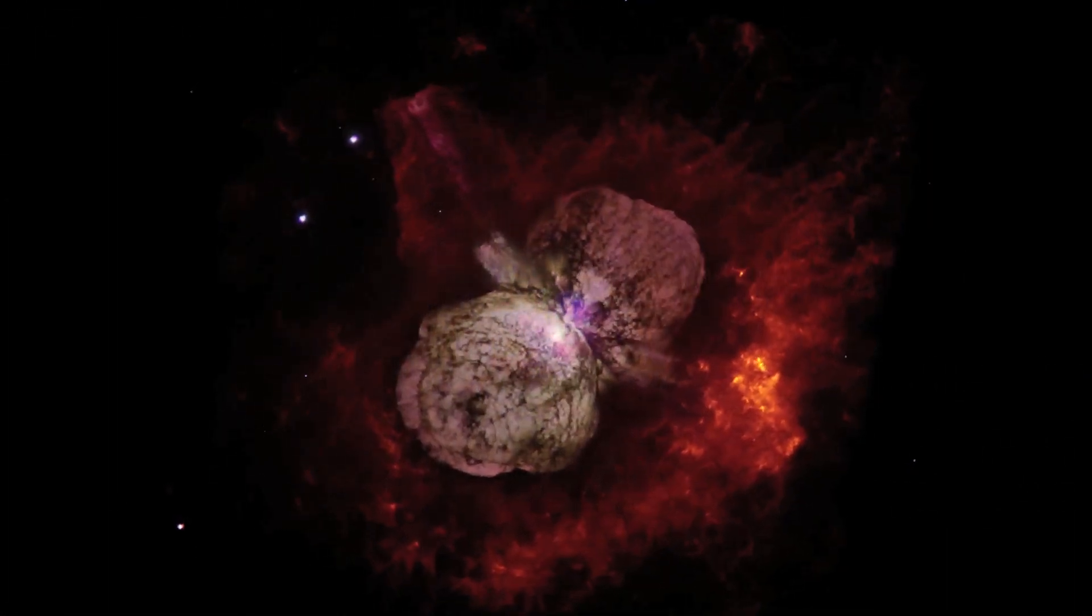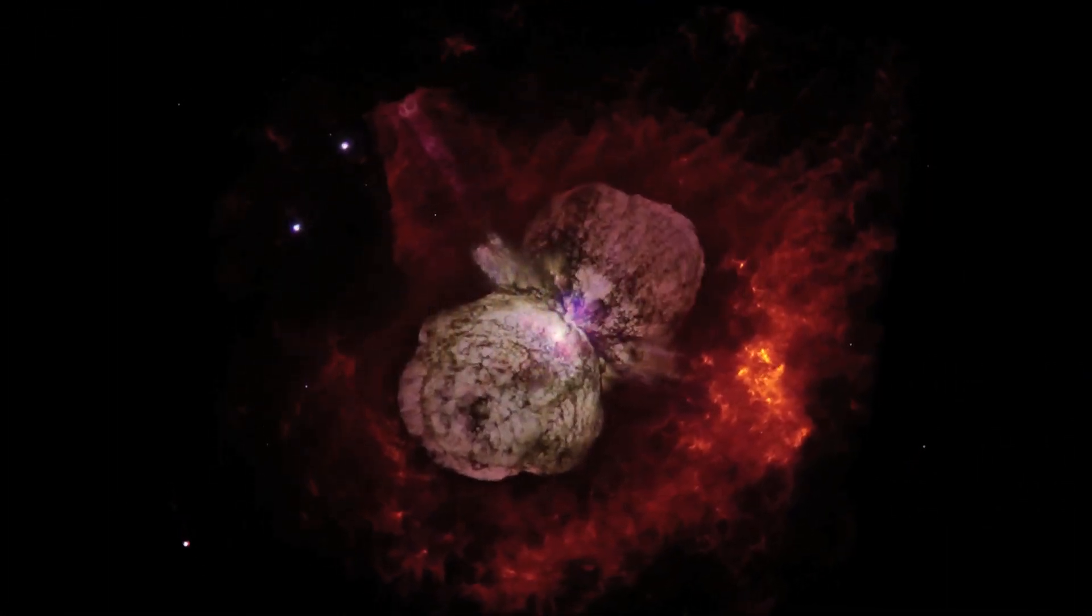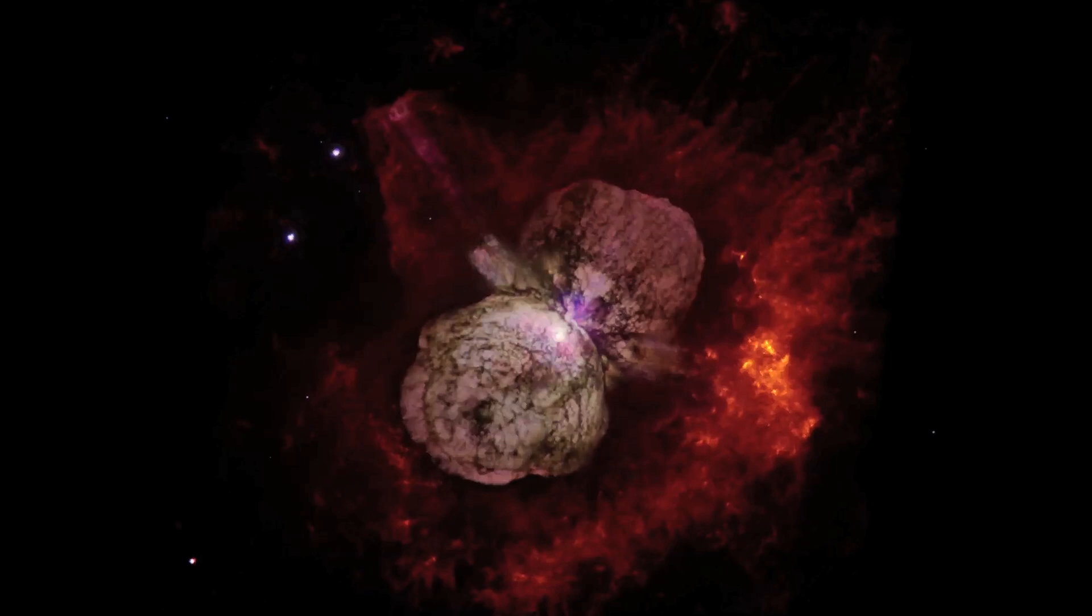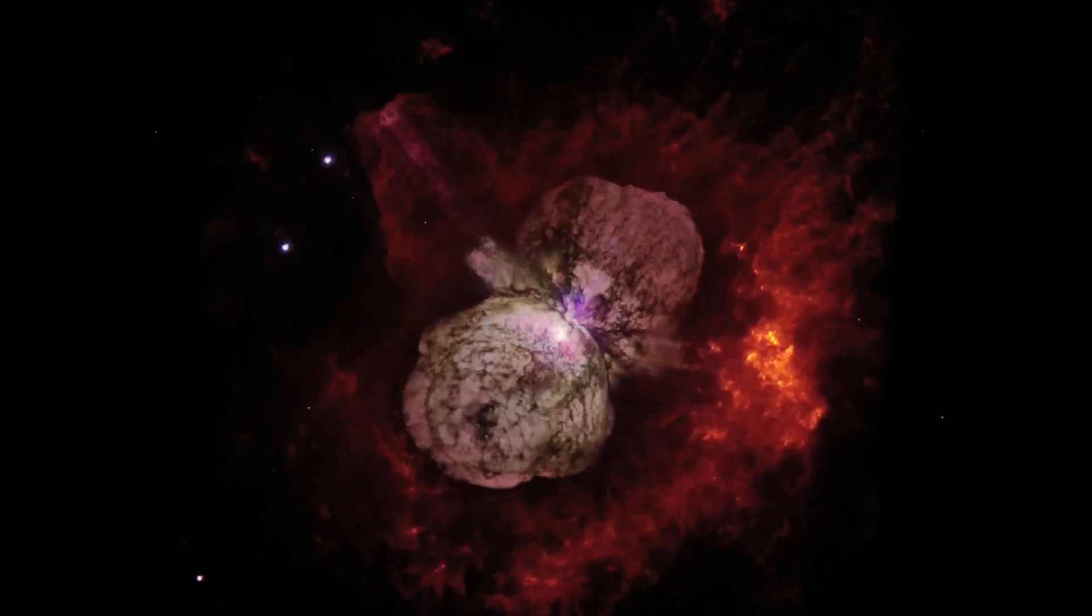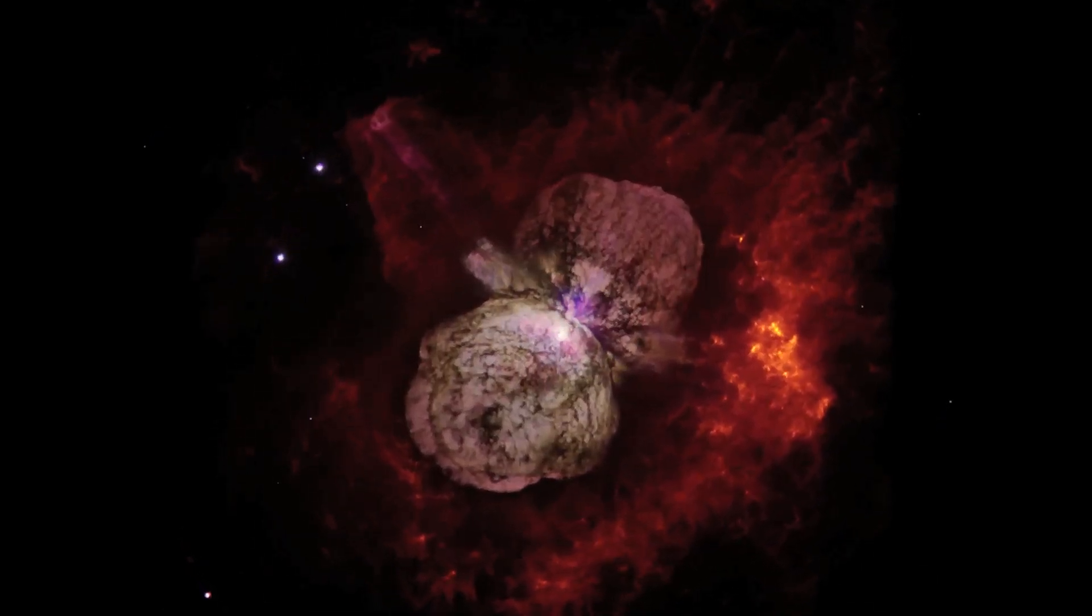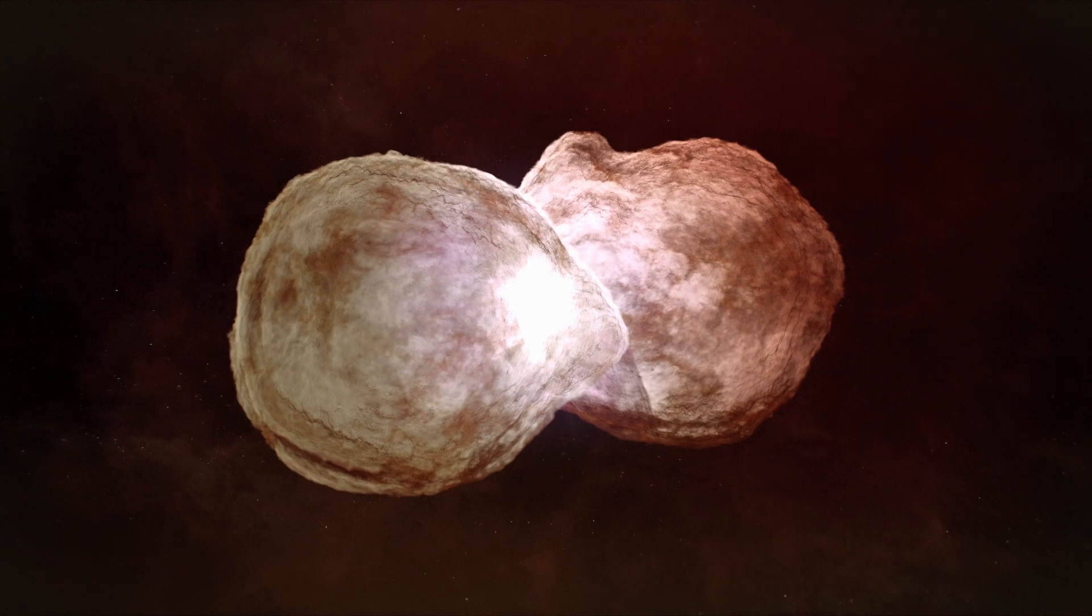Eta Carina is the most massive star within 10,000 light years. In the mid-19th century, a tremendous eruption hurled enough gas into space to make at least 10 copies of the Sun.